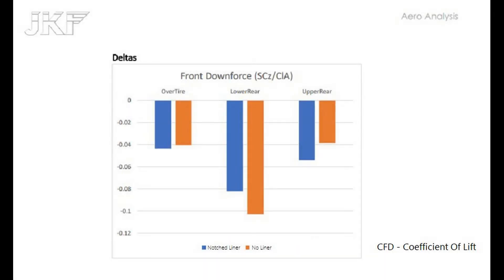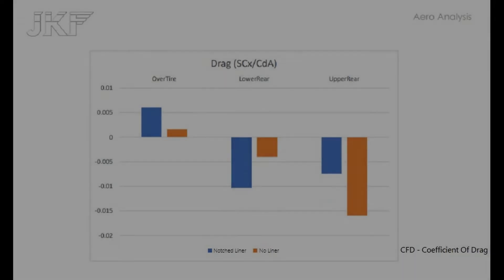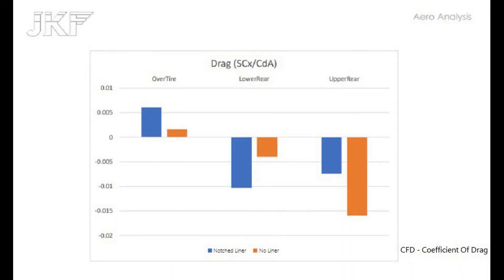Looking at the data, we have our over the tire, rear lower, and our rear upper. Blue is the fender liner intact with just a small hole cut in it for the louver itself, and then orange is no fender liner entirely.